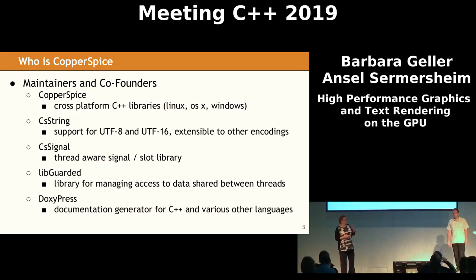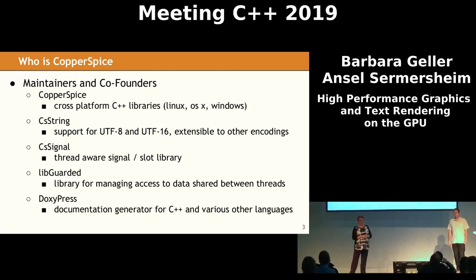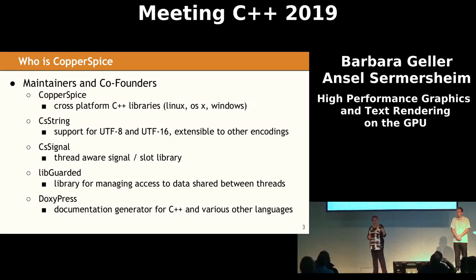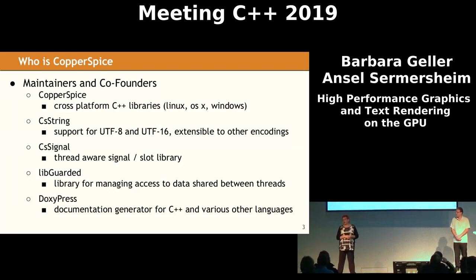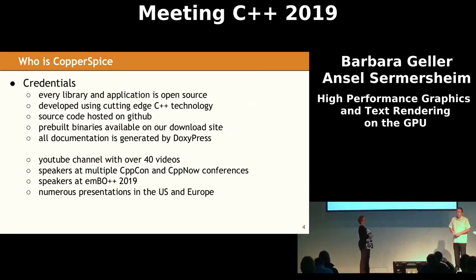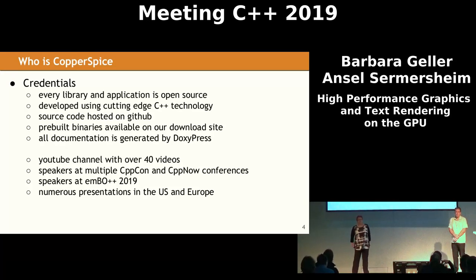Before we get started, we just want to tell you a little bit about who we are. Ansel and I are the co-founders of the CopperSpice project, and it is a set of GUI libraries. We also have several other libraries as part of the suite. We also developed DoxyPress, which is a replacement for Doxygen that really supports all the templates and everything you need in C++. One of the founding principles of the CopperSpice project is that everything we do is open source, and we use the most modern C++ technology we can.